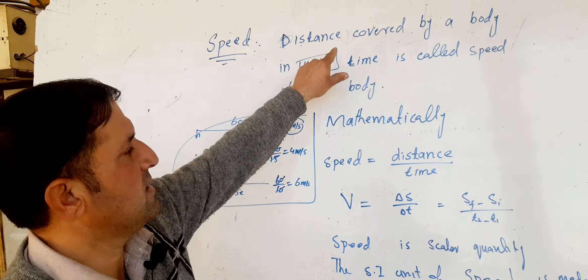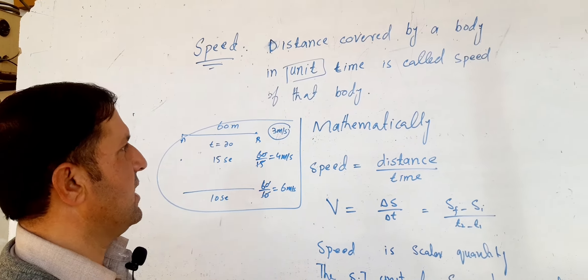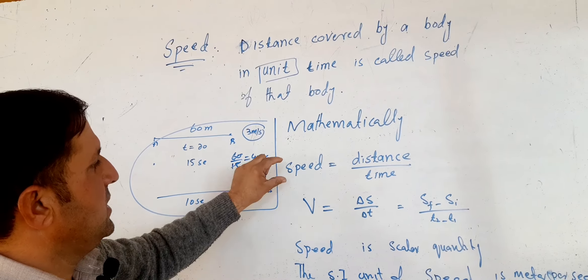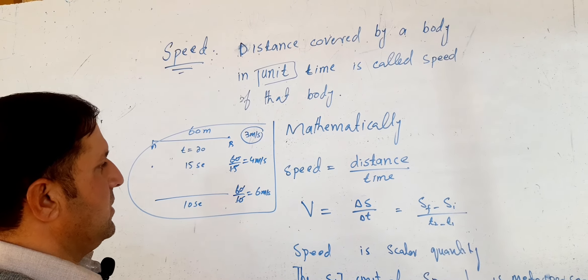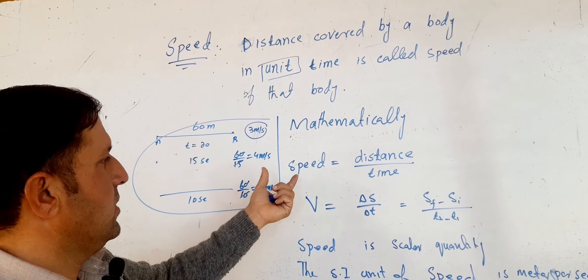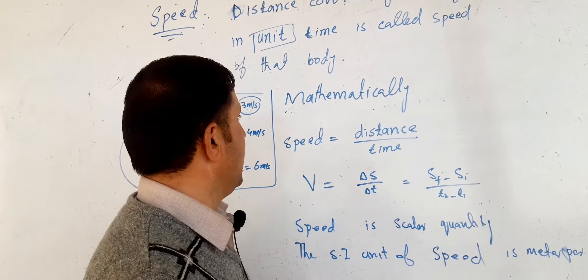The distance covered by the body in unit time is called the speed of the body. Mathematically, speed is equal to distance divided by time.